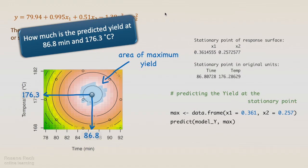We can use the predict function to calculate it. First, we are going to create a data frame called max, with the coded coordinates of the stationary point, and then use the predict function to calculate the response of the model Y for the max data frame.